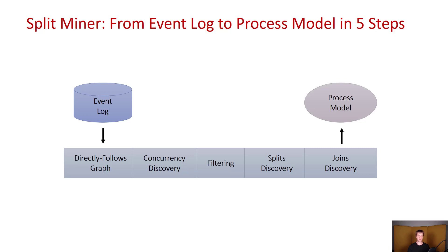It will begin by discovering a directly follows graph from the event log, then it will proceed with concurrency discovery, filtering, followed by the discovery of split gateways that will be present in the final discovered BPMN model, and it will finish by discovering the join gateways.